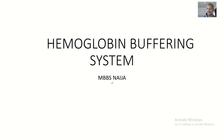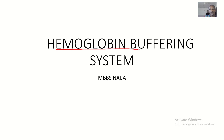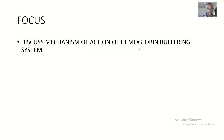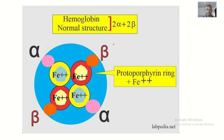We're making videos on the buffering systems of the body. Hemoglobin is one type of buffering system, so we'll be making a video on the hemoglobin buffering system. Basically, we are discussing the mechanism of action of the hemoglobin buffering system.